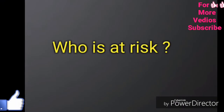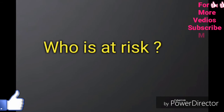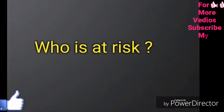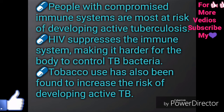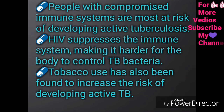Who is at risk? People with compromised immune systems are most at risk of developing active tuberculosis. HIV suppresses the immune system, making it harder for the body to control TB bacteria. Tobacco use has also been found to increase the risk of developing active tuberculosis.